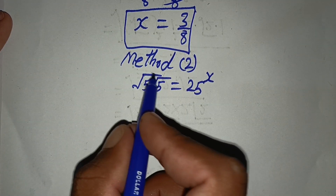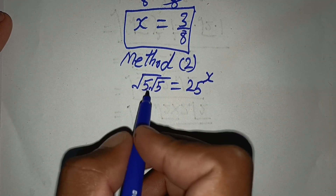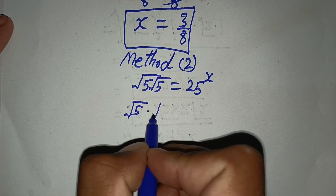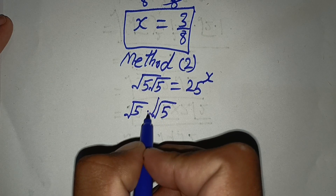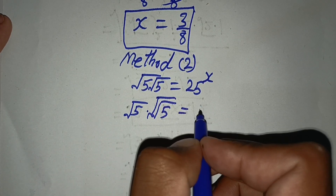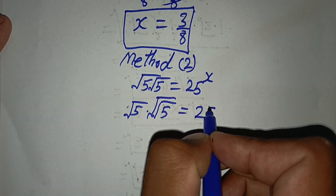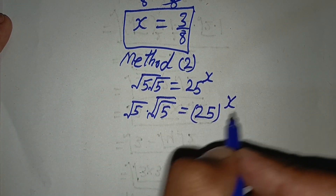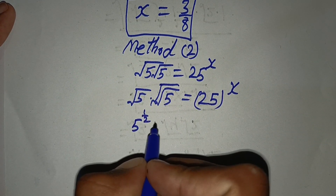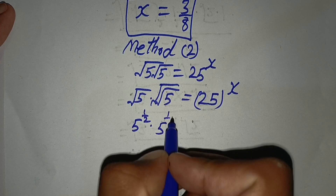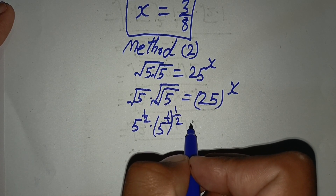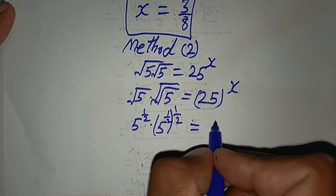Now we solve by using the second method. We can rewrite this equation: square root of 5 times square root of square root of 5 equals 25 power x. This becomes 5 power 1 upon 2 times 5 power 1 by 2 times 1 by 2, and 25 can be written as 5 squared, times x.